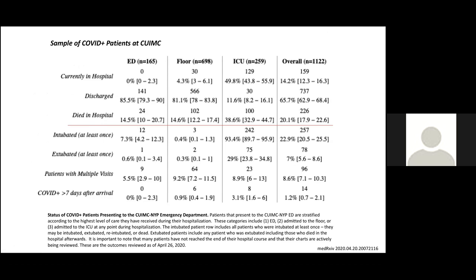Looking above the red line, of the patients who arrived at an emergency department and either went home, went to the floor, or went to the ICU: 14% are still in the hospital, two-thirds are home, and 20% have died. Patients who required intubation and went to the ICU — 38% did die. The 11% who discharged means discharged from the hospital. 29% were extubated, meaning 50% are still in the hospital. Some estimate the final ICU mortality figure will come in around 50%, but our overall mortality was 20%.